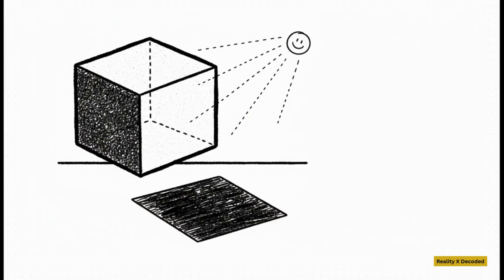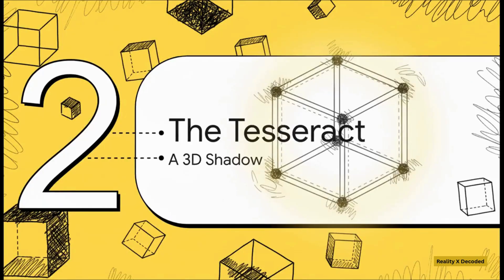Here's the rule that makes this whole thing click — it's super simple. A 3D object, like our cube, casts a flat 2D shadow. The shadow always has one less dimension than the object that's casting it. This is the key — remember that rule. So let's take that simple rule and apply it to something we can't actually see: an object from the fourth dimension.